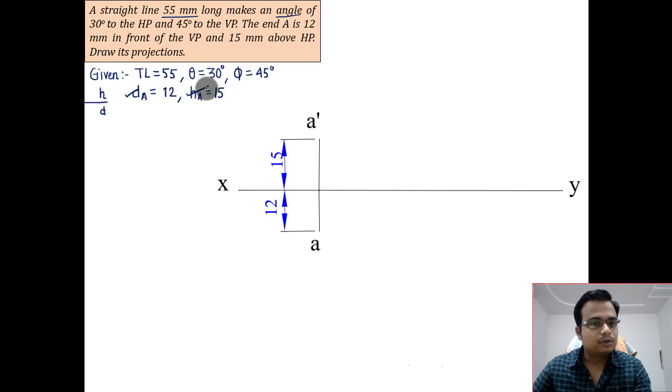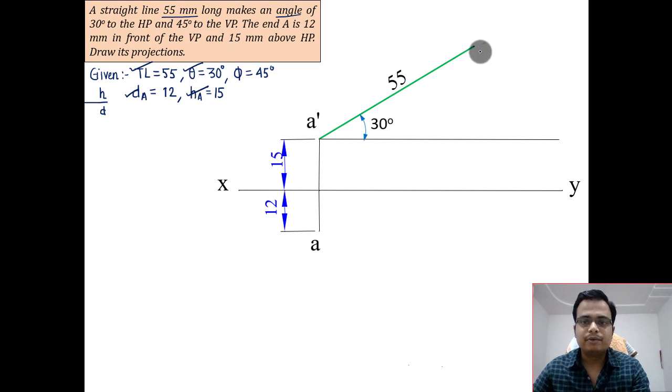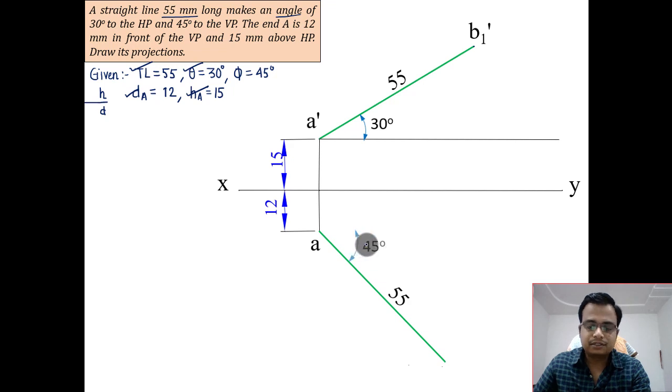These two details have been used. The next data that we'll use is this 55 again at an angle of 30 degrees. So 55 at an angle of 30 degrees, let's mark over here B1 dash. Below XY, 55 again, this is going to be 45.